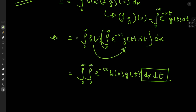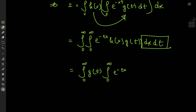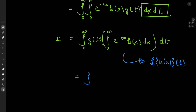What's the utility of this switch? Well, g(t), which is independent of x, can be taken outside the first integration with respect to x. So we have the integral from 0 to infinity of g(t) times the integral from 0 to infinity of e^(-tx) times h(x) dx, with the outer integration with respect to t. That inner integral is the Laplace transform of h(x) treated as a function of t. So we have the integral from 0 to infinity of g(t) times the Laplace transform of h, evaluated at t, dt.